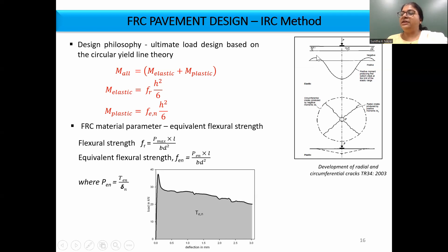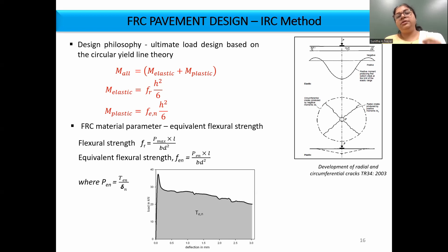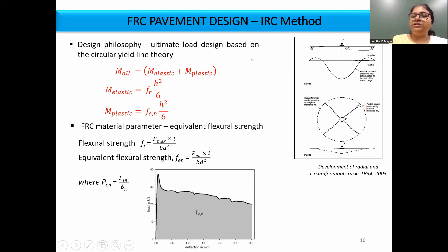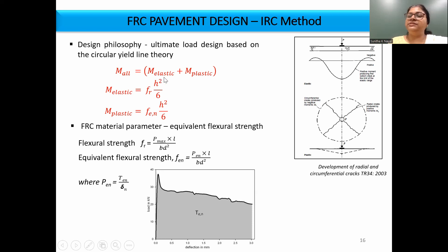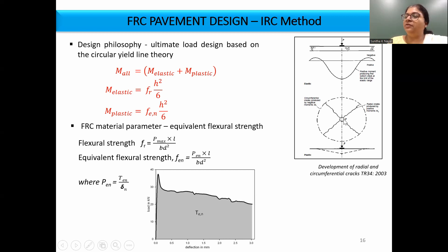By the time the crack appears at the top, the yield lines at the bottom of the slab have already fully developed and the moment along these yield lines is already in the inelastic regime — the moment capacity is the plastic moment capacity of the material. At the same time, when the crack appears at the top, it is represented by the elastic moment capacity. That is why in the ultimate load design based on circular yield line theory, the allowable moment on the slab can be considered the sum of elastic moment carrying capacity at the negative yield line at the top and the plastic moment carrying capacity along the positive yield lines at the bottom.